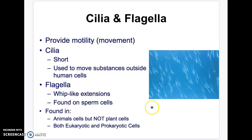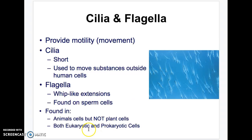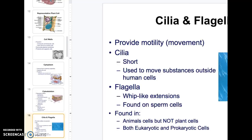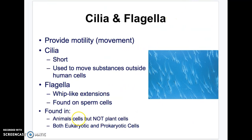Cilia and flagella — flagella are those whip-like extensions, those long tails, typically found in sperm cells. Cilia behaves similarly but is much shorter, like short tails that cover the organism. Cilia are these tiny little hair structures covering the cell, and they move similarly to flagella, which are whip-like structures that help the organism swim. Cilia and flagella are found in animal cells, specifically sperm, but not in plant cells. They are found in prokaryotic and eukaryotic cells, but not in plant cells.